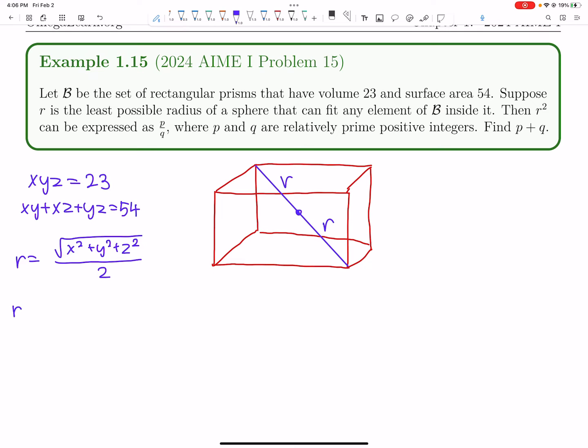Let's square both sides. We get 4R squared is x squared plus y squared plus z squared. We're basically trying to find minimum value of R squared, which is the same thing as finding the minimum of x squared plus y squared plus z squared, and then we'll divide by 4.